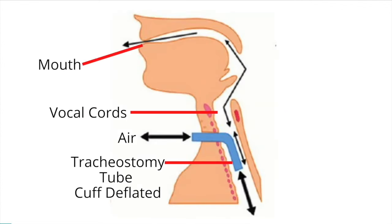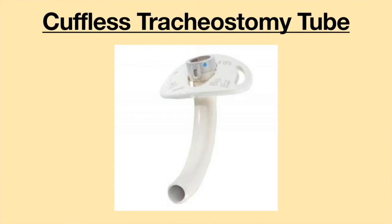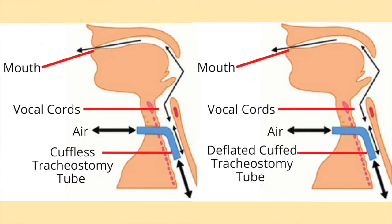In order to speak, the cuff must be deflated. This allows air to travel up the airway and through the vocal cords. A tracheostomy tube without a cuff is called a cuffless tracheostomy tube. It functions in the same fashion as a deflated cuff — air leaks around the tracheostomy tube and travels up the airway and exits via the nose and mouth. Speech may be produced when air passes through the vocal cords.